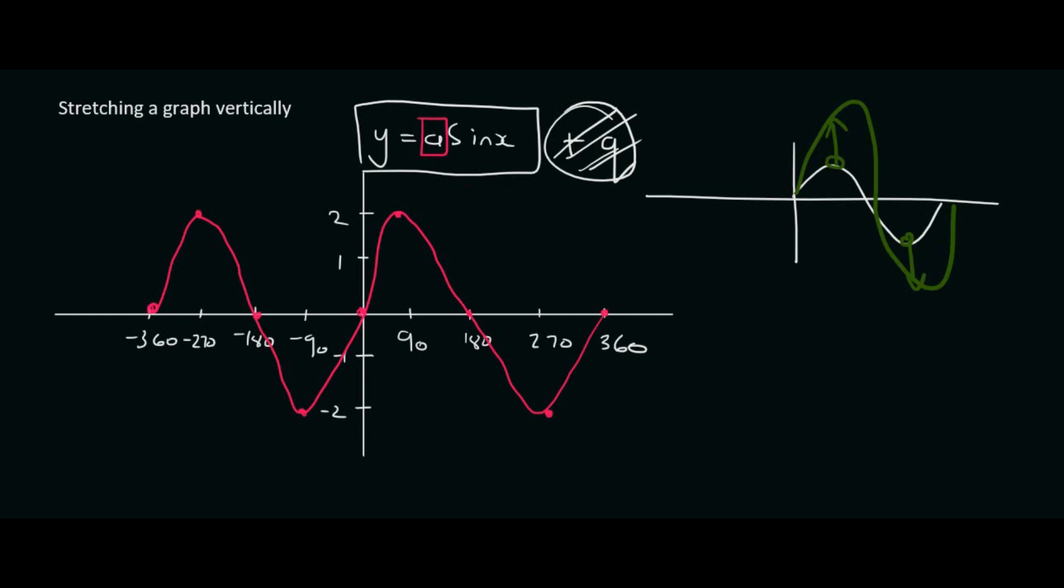A normal sin graph would look like this, in white. It would go up to 1 and down to minus 1. So the original, and then the new. On the original graph, the lowest is minus 1 and the highest is 1. On the new graph, the lowest is minus 2 and the highest is 2.